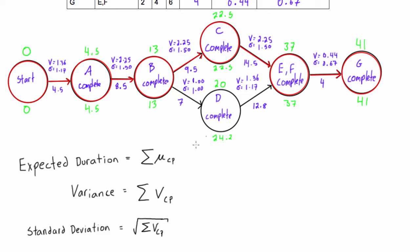So let's fill in that information. The sum of the expected durations for each activity along the critical path: when you add those up you have 4.5, 8.5, 9.5, 14.5, and 4. The sum comes out to 41, and you can see that's what we learned visually from just inspecting the network diagram.